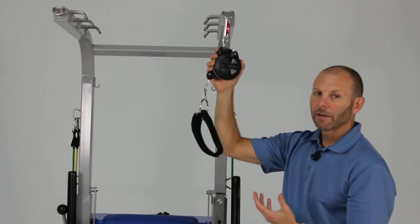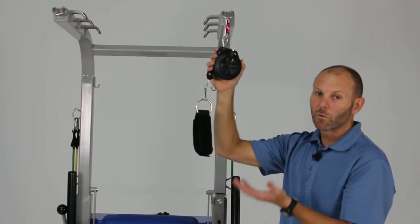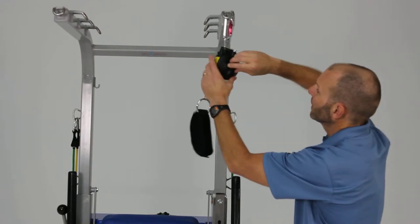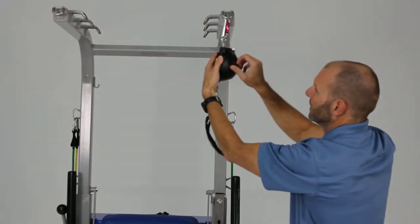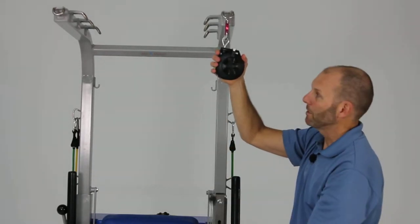If you want to make it easier for the patient by giving them more support, you simply take this knob up here and you turn it in a clockwise direction, and now you have more spring assist with the unit.